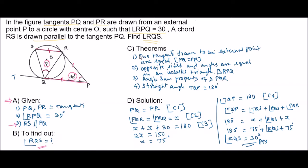Now we should know the related theorems used in this problem. Two tangents drawn from an external point are equal, so PQ is equal to PR where P is the external point. Opposite sides and angles are equal in an isosceles triangle. Let us consider X as the equal opposite angles. TQP is a straight angle, that is 180 degrees.